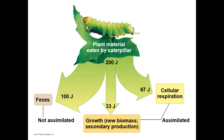Here's a caterpillar eating plants, and there are 2,000 joules available to the caterpillar. 67 joules are lost as cellular respiration, 33 joules become new biomass, and 100 joules are not assimilated at all.